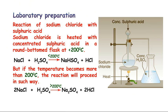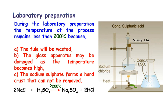At temperatures below 200 degrees Celsius, the reaction proceeds as: NaCl + H2SO4 → NaHSO4 (sodium bisulfate, an acid salt) + HCl gas. If the temperature exceeds 200 degrees Celsius, the reaction proceeds as: 2NaCl + H2SO4 → Na2SO4 + 2HCl, so the rate of HCl production increases above 200 degrees Celsius.